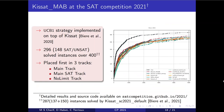We submitted our solver KISSAT-MAB to the SAT competition 2021, implementing UCB1 on top of KISSAT. The solver managed to solve 296 instances with equal numbers of SAT and UNSAT instances out of 400 total, and placed first in three tracks: the main track, the main set track, and the no-limit track. Results and source code are available on the SAT competition website, and further details are in the paper.